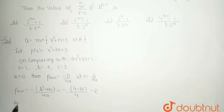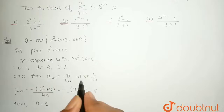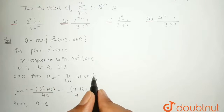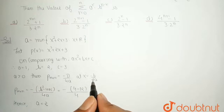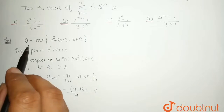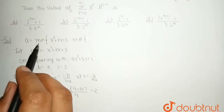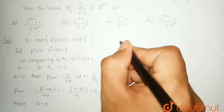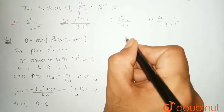Hence a = 2, obtained at x = −b/(2a) = −2/2 = −1. So at x = −1 we get the minimum value of a, which is equal to 2. Now let us find the value of b.